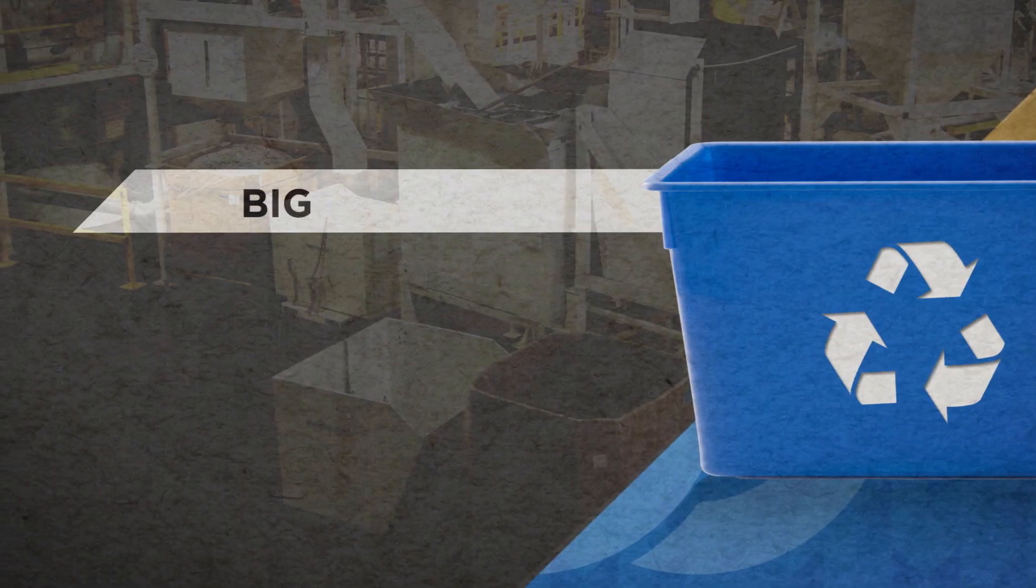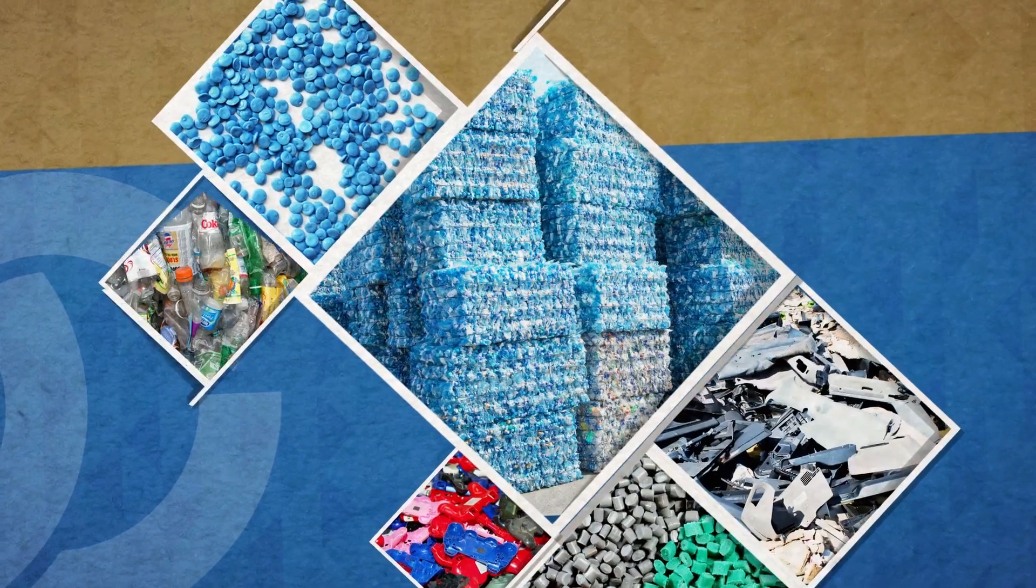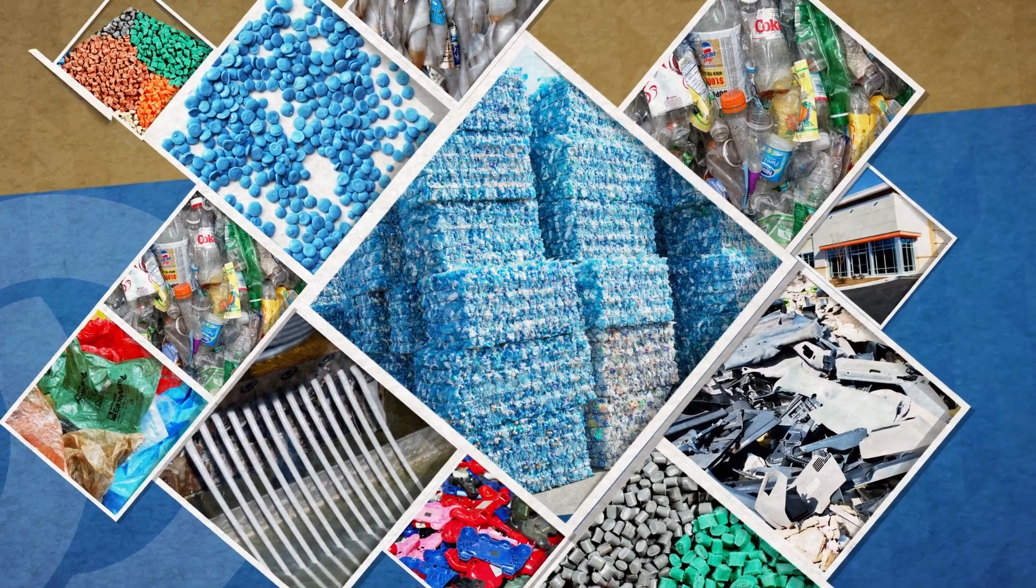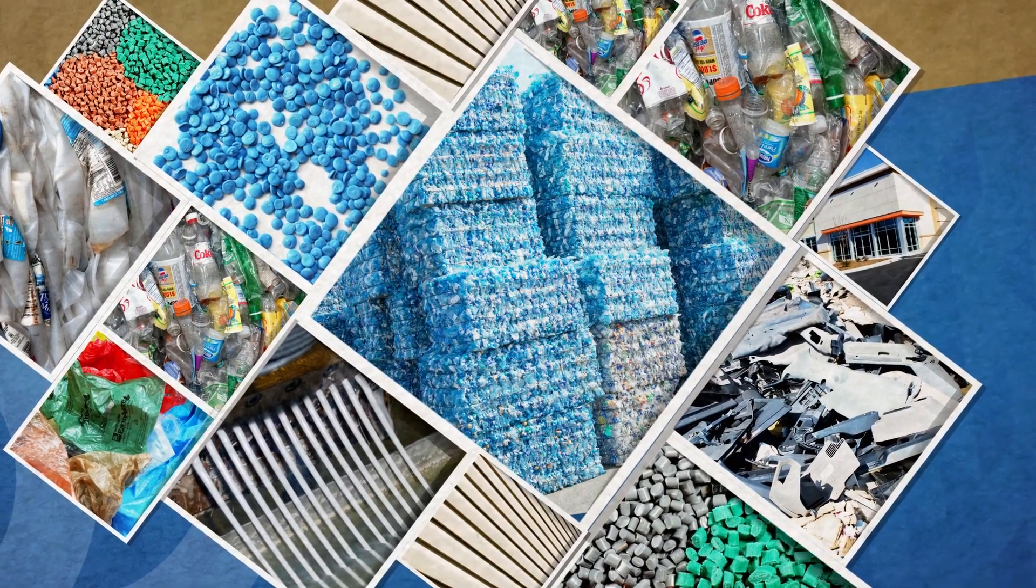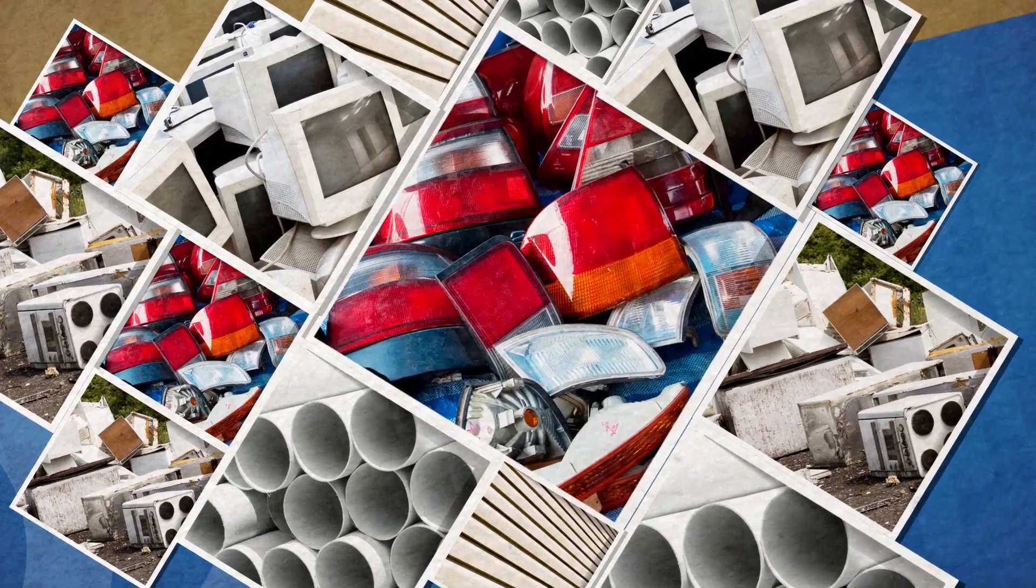But plastics recycling is bigger than the bin. The rest comes from engineered and industrial plastics, high-grade materials found in vinyl siding, PVC pipe, computers, appliances, and automobiles.